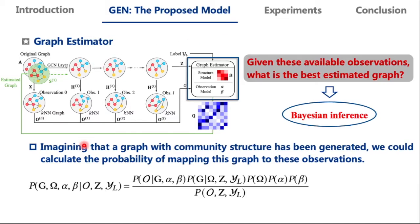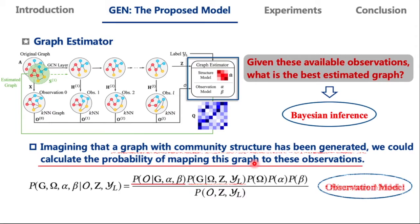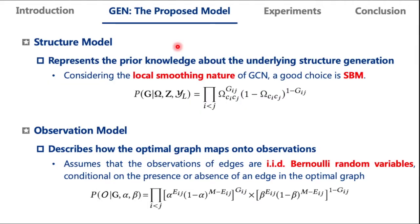Imagine that a graph with community structure has been generated. We could calculate the probability of mapping this graph to these observations. If we can do this, Bayesian inference allows us to invert the calculation and compute the posterior distribution of graph structure. Hence, our goal is achieved. The procedure is formalized as follows: generating graphs corresponds to the structure model. Calculating the probability of observation is observation model.